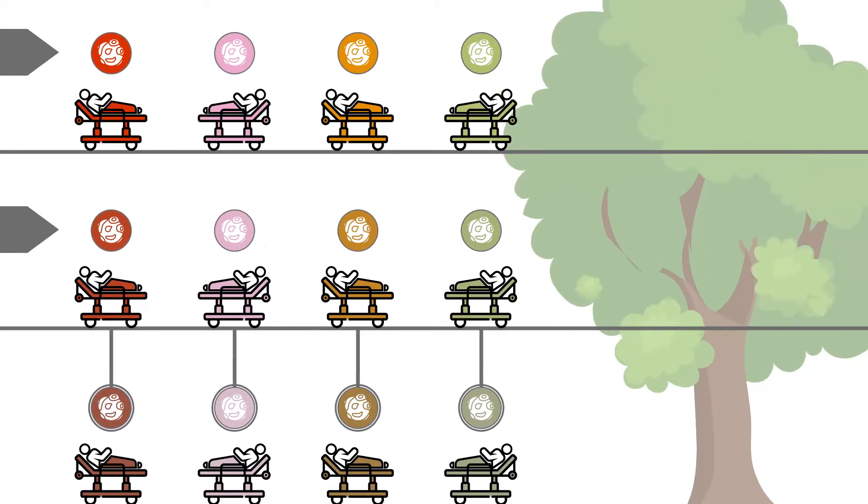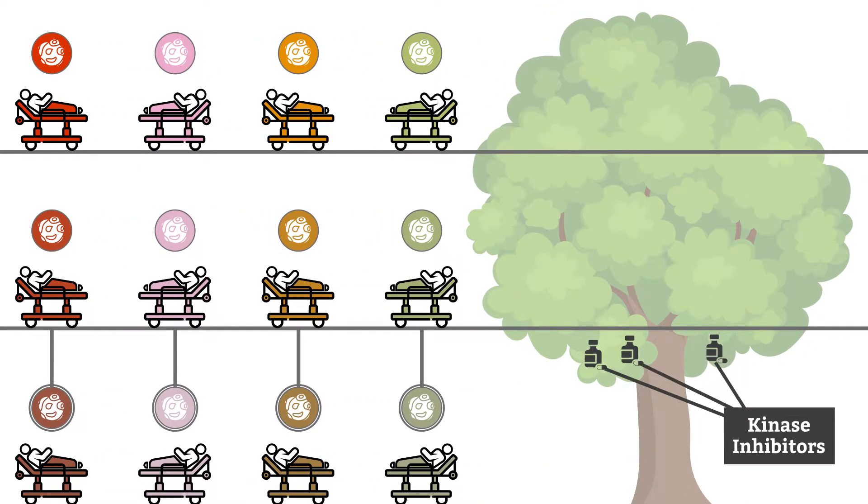On the climb up the therapeutic tree, kinase inhibitors, represented by the low-hanging fruit, are the dominant type of targeted therapy on the market.